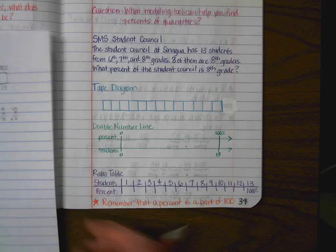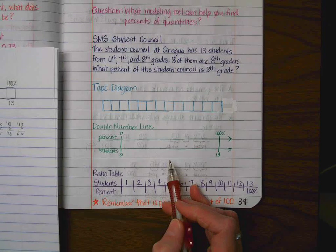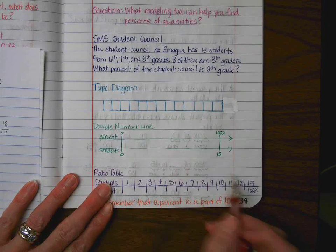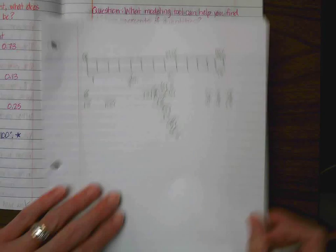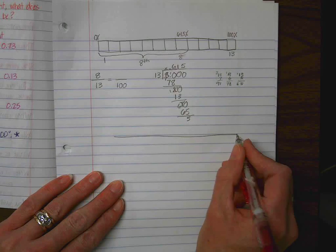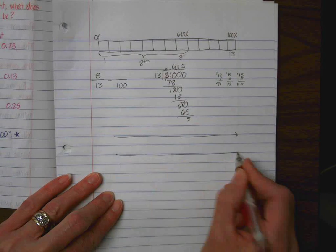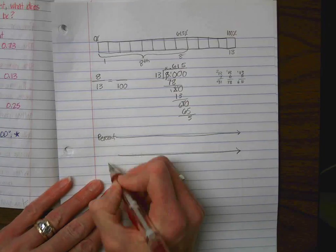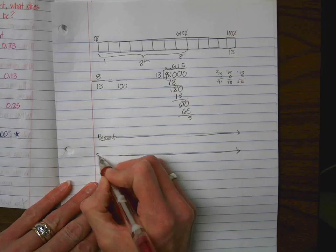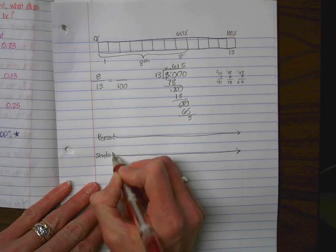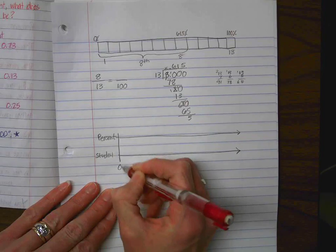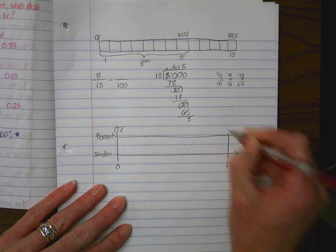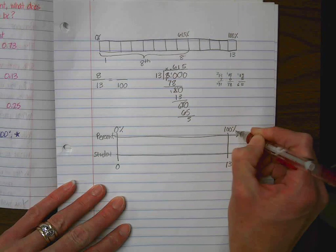Or the other way that we can figure it out is we can use the double number line, which is very similar to the tape diagram doing the same things, except on the double number line, you're going to use both of your numbers. And this would be percent. And this would be students on student council. So, when we have zero students, we have zero percent. When we have all 13 students, we have 100%.